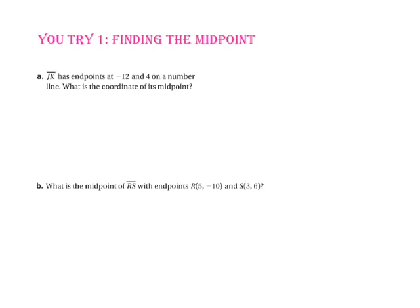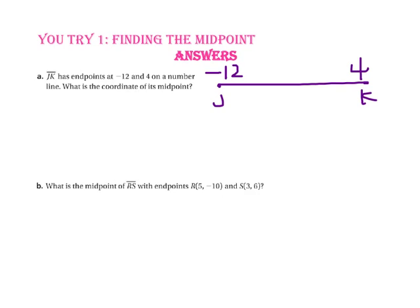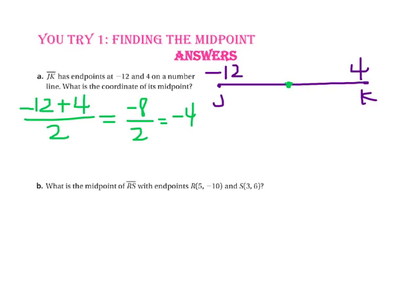Pause the video and do U-Try number 1. For part A, segment JK has endpoints at negative 12 and 4 on a number line. J is at negative 12 and K is at 4. To find the coordinate of the midpoint, we take the average: negative 12 plus 4 divided by 2. Negative 12 plus 4 is negative 8, divided by 2 is negative 4. So our midpoint is at negative 4, which is 8 units from either endpoint.